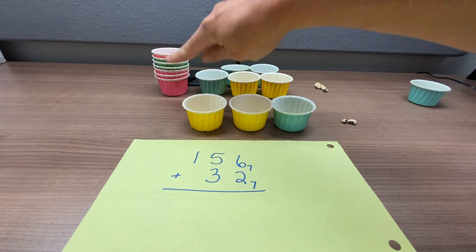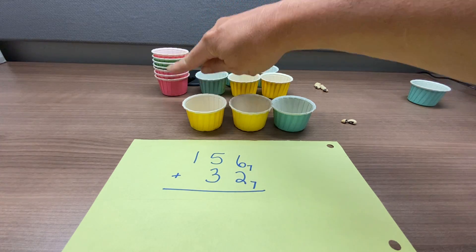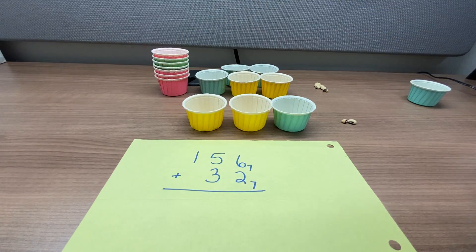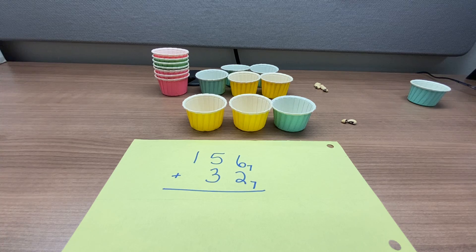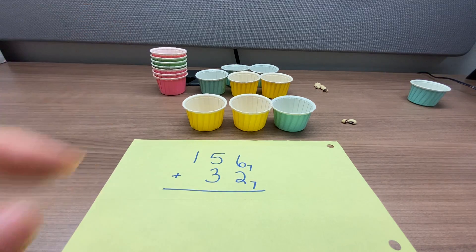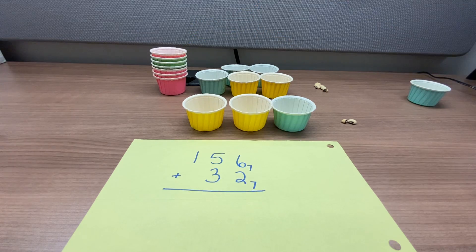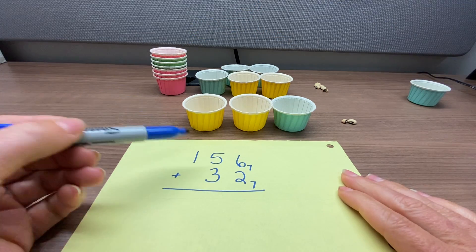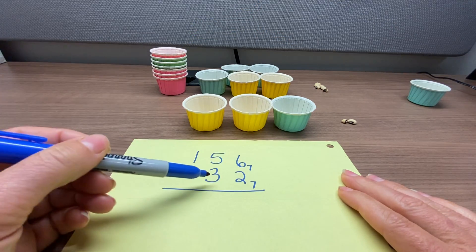And then we would have a stack of 7 cups with 7 beans in each for the third place value, which is the limit of this manipulative because it gets ridiculous after that. So you've got ones, you've got sevens, you've got 49s. So we're going to demonstrate adding 1, 5, 6, 2, 3, 2.